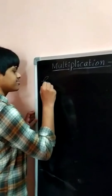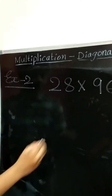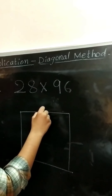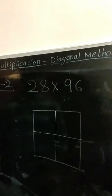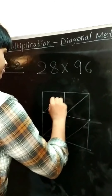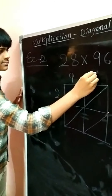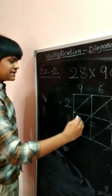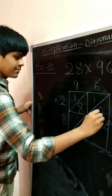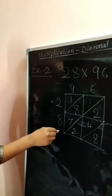Let us solve another example: 28 into 96. Draw a square. Make it into squares with 2 rows and 2 columns — totally 4 squares. Draw the diagonals to each square. Write the multiplicand column-wise and the multiplier row-wise. Find the product row-wise and fill each and every row diagonal-wise. 2×9=18, 2×6=12, 8×9=72, 8×6=48. Add the numbers in the diagonals to get the product.